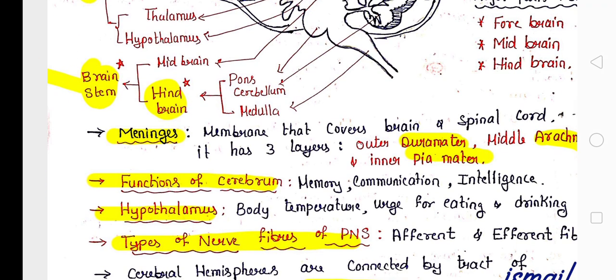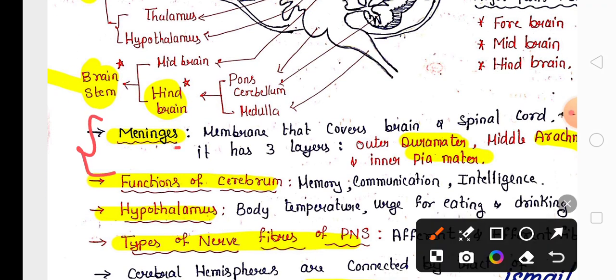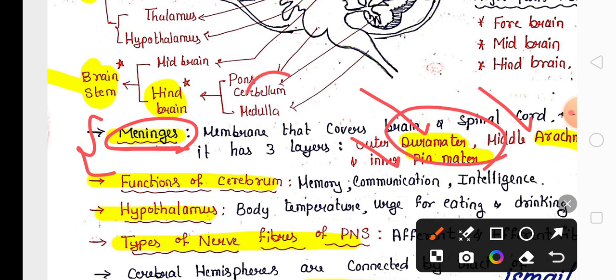Brain and Spinal Cord are covered by a membrane called Meninges. It has three layers: outer Dura Mater, middle Arachnoid, and inner Pia Mater. Between these layers, cerebrospinal fluid acts as a shock absorber and helps transmit nutrients to the brain.